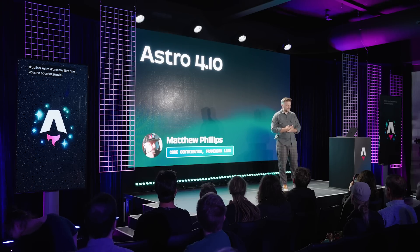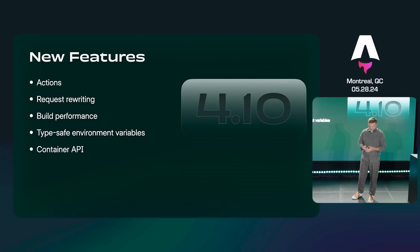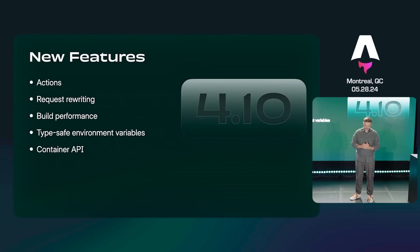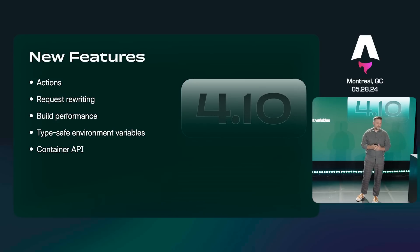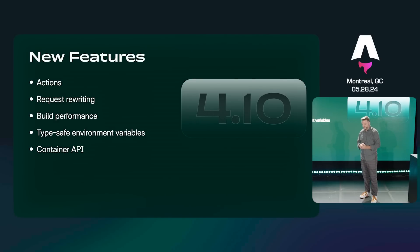I'll explain what that is. So these are the features: you've already heard about actions, I'm not going to go over that. We also have request rewriting, a number of build performance improvements, type-safe environment variables, and a new way to use Astro inside places that it previously couldn't go — we call that the container API.